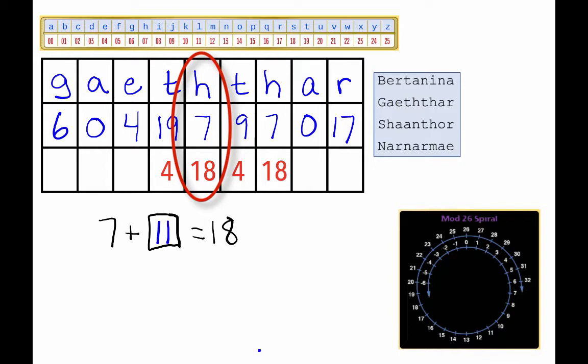7 plus 11 is 18. So 11 is our key. Let's check that that works for the letter T. Does T encrypt to 4 using the key of 11? Let's see.